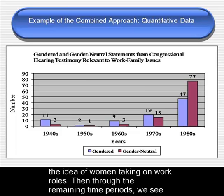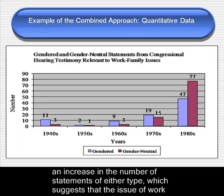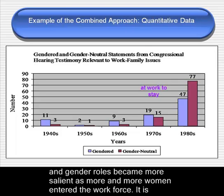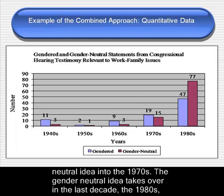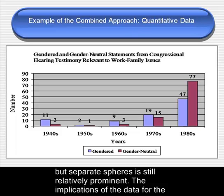Then, through the remaining time periods, we see an increase in the number of statements of both types, which suggests that the idea of work and gender roles became more salient as more and more women entered the workforce. It is also meaningful that the separate spheres idea is more prominent than the gender-neutral idea into the 1970s. The gender-neutral idea takes over in the last decade, the 1980s, but separate spheres is still relatively prominent.